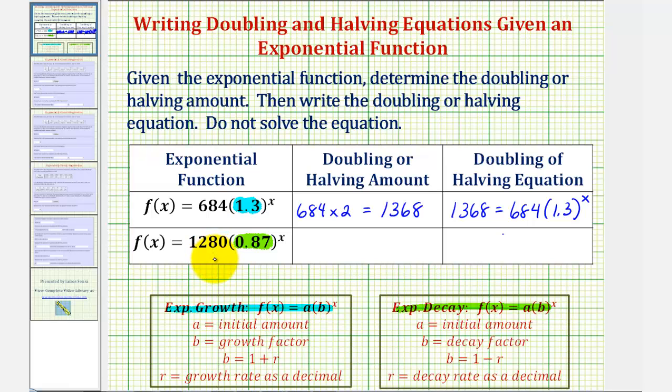So to find half of this, we can multiply by one half or divide by two. Let's go ahead and divide by two. 1,280 divided by two would be 640, which would be the halving amount.